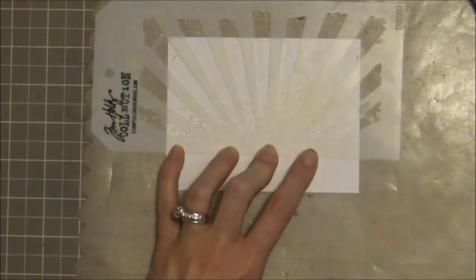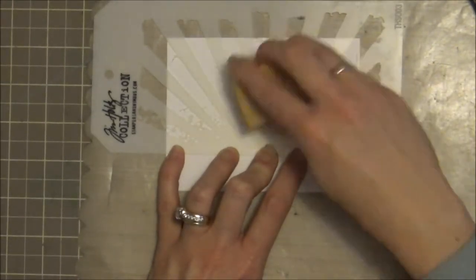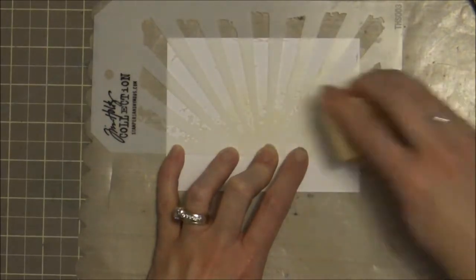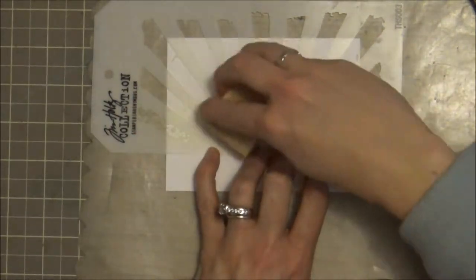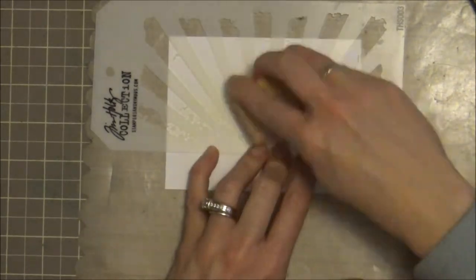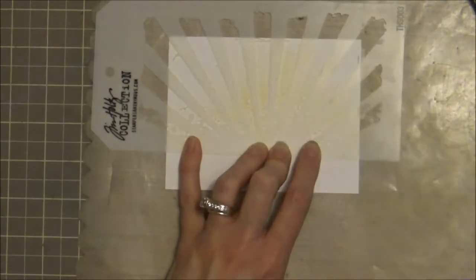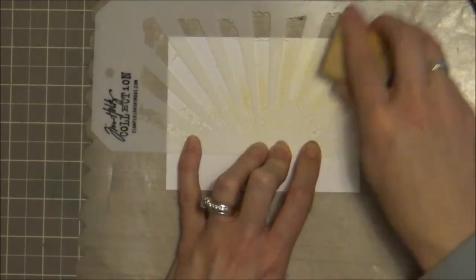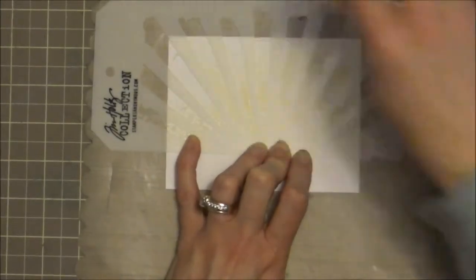Now for this stencil, it is highly distressed, so what that means at the base—it's kind of hard to see in the video, but it has a ton of little tiny pieces. Normally I'd work in a circular motion, but if you do that with a stencil like this, you easily bend or rip off those tiny little pieces.